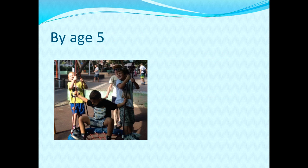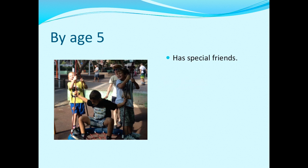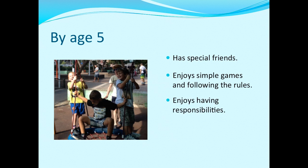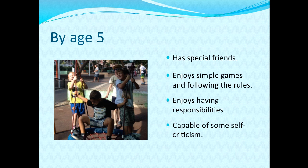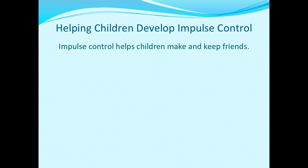By age five — as you can see with Eddie, IG, Nathan, and Billware in the background — children are really in a friendship group. This is where friendship groups truly start to form. They enjoy games, are able to follow rules more consistently, and enjoy having responsibility. They also begin to become capable of self-criticism: 'I didn't do that very well, I could do that better' — and they start to understand that.